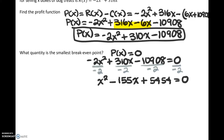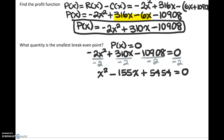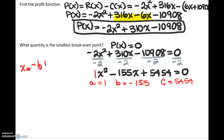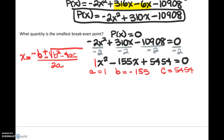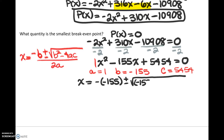Now it is easier to factor, or if you're not feeling confident with those numbers, we can jump into the quadratic formula. Using the quadratic formula, a is 1, b is negative 155, and c is 5,454. The quadratic formula is negative b plus or minus the square root of b squared minus 4ac, all divided by 2a. We plug our numbers into this formula and out should pop our x values.